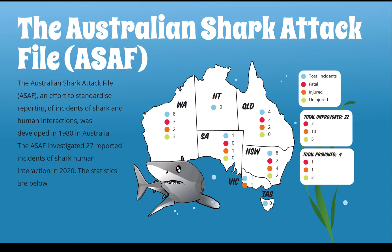The Australian Shark Attack File, or ASAF, is a way to standardize reporting of incidents of shark and human interactions, developed in Australia in 1980. In 2020 the ASAF investigated 27 reported incidents of human and shark interactions. These are divided up by state — the blue dot shows total incidents, the red dot represents fatal incidents, the orange dot those who were injured, and the green dot those who were uninjured.